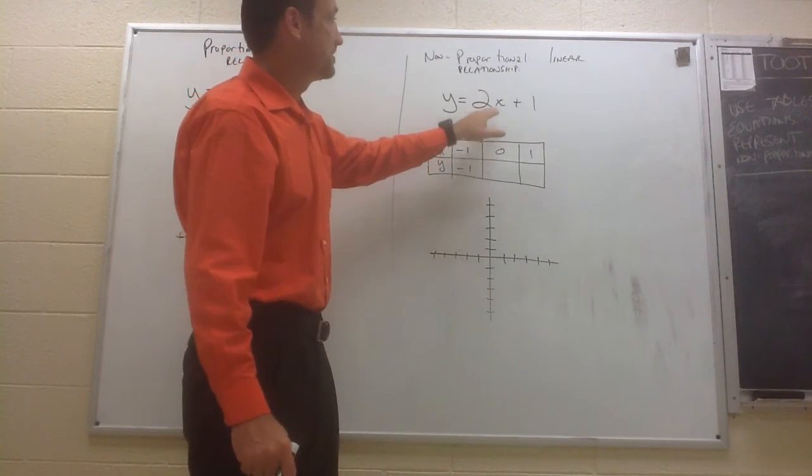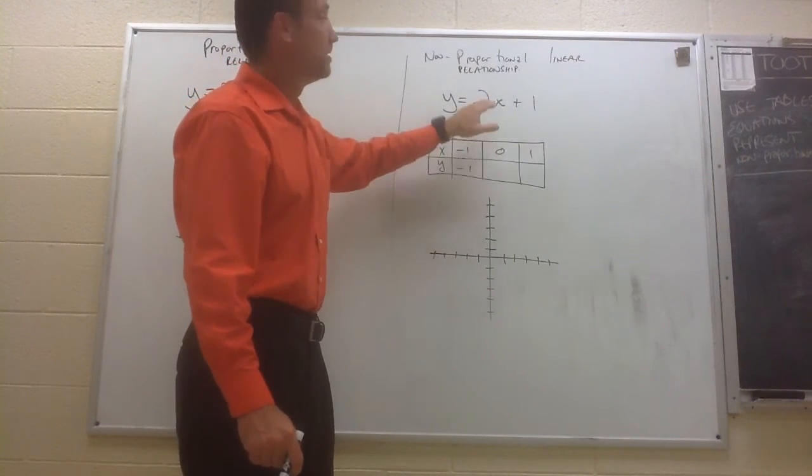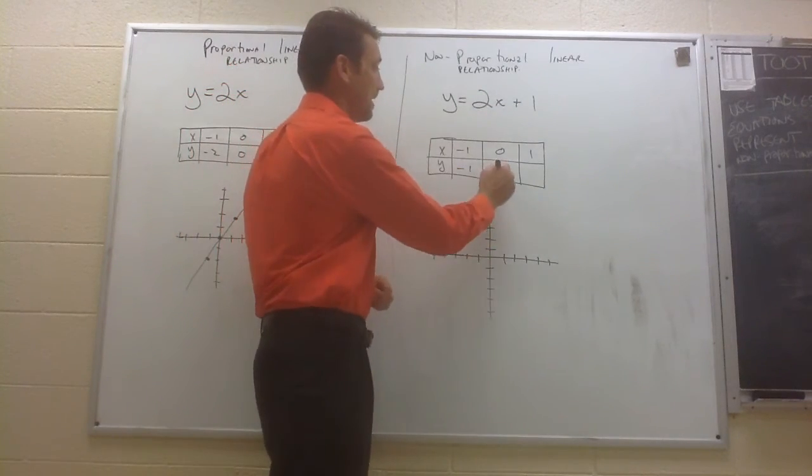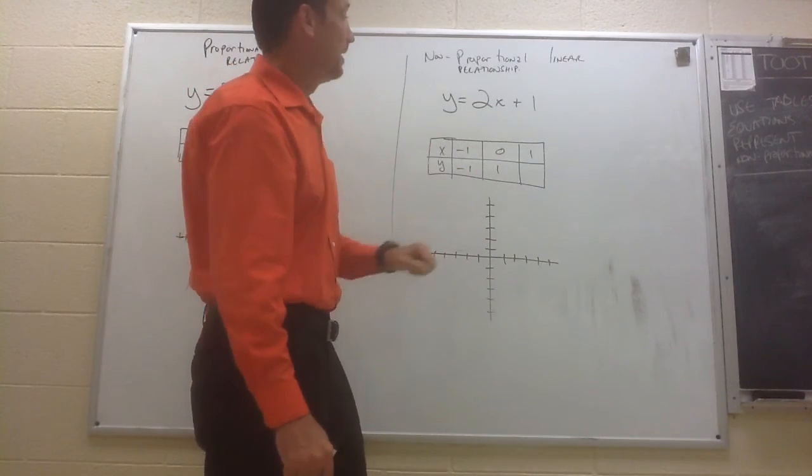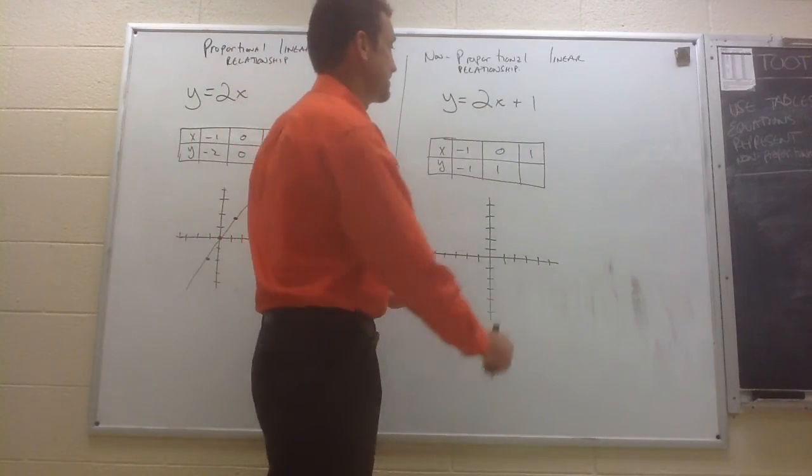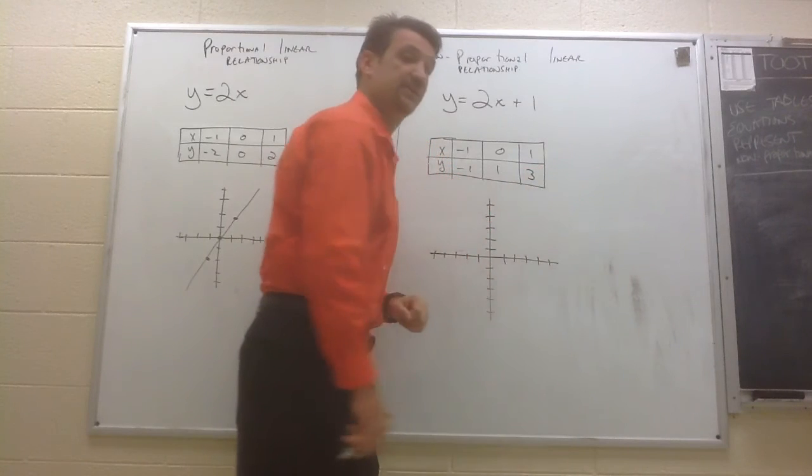If I plug in a 0 for x, 2 times 0 is 0. 0 plus 1 is 1. So when x is 0, y is 1. And if I plug in a 1 for the x, 2 times 1 is 2, plus 1 makes 3. When x is 1, y is 3.